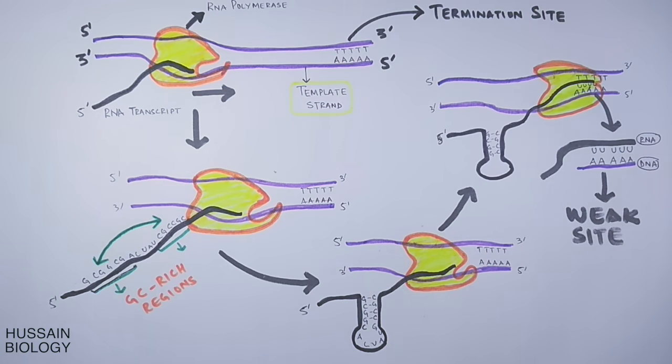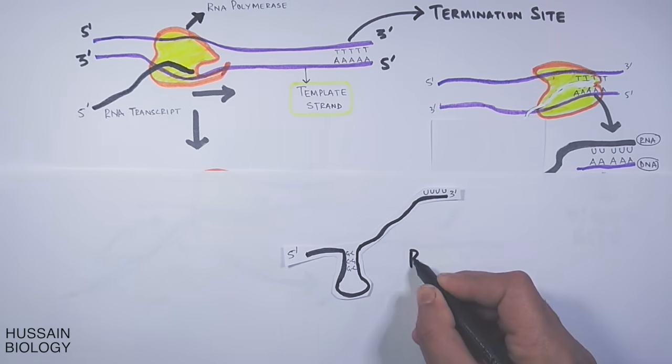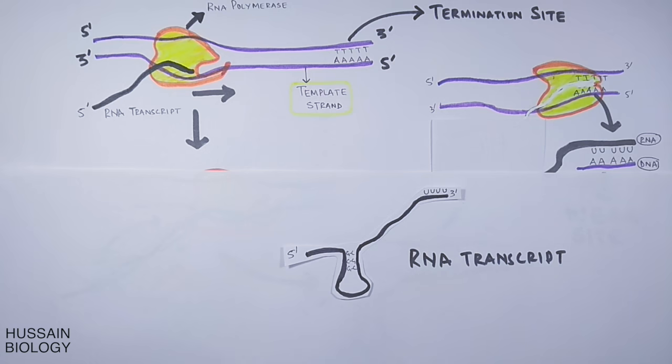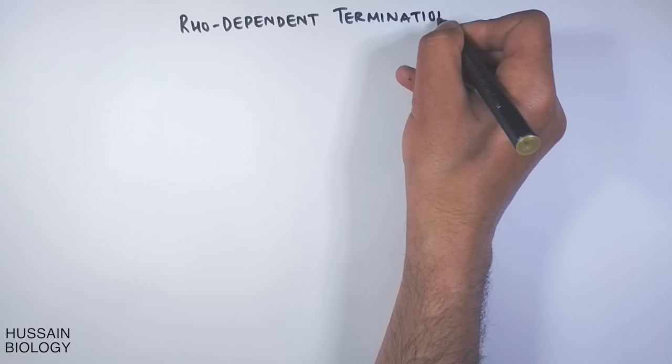In the end, we get the RNA molecule out of the polymerase complex easily, as shown in the diagram. So this is how rho-independent termination works. Now let's see how rho-dependent termination is driven.